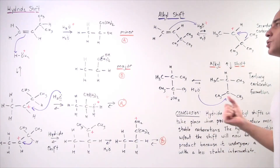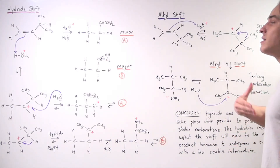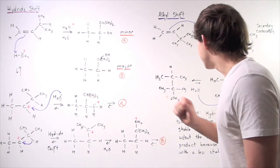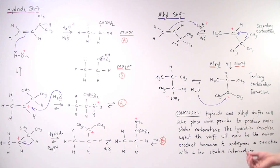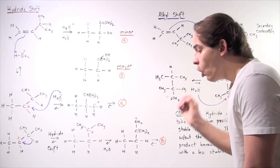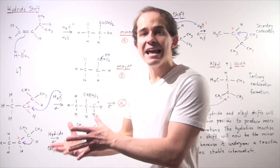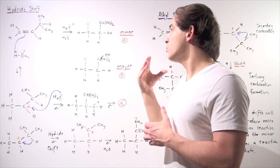In conclusion: hydride and alkyl shifts will take place when possible to produce more stable carbocations, because the more stable the carbocation, the more stable the intermediate and the transition state leading to it. The hydration reaction without the shift will be the minor product since it proceeds through a less stable intermediate. These hydride and alkyl shifts won't always occur, but when there is a possibility they will lead to a more stable intermediate, they will take place and compete with the straightforward hydration reaction.